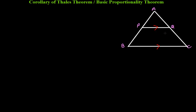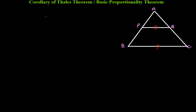Whenever a line PQ intersects two sides of a triangle and is parallel to the third side BC, the ratio of division is the same for both sides. That is, AP over PB equals AQ over QC — both sides have the same ratio of division.